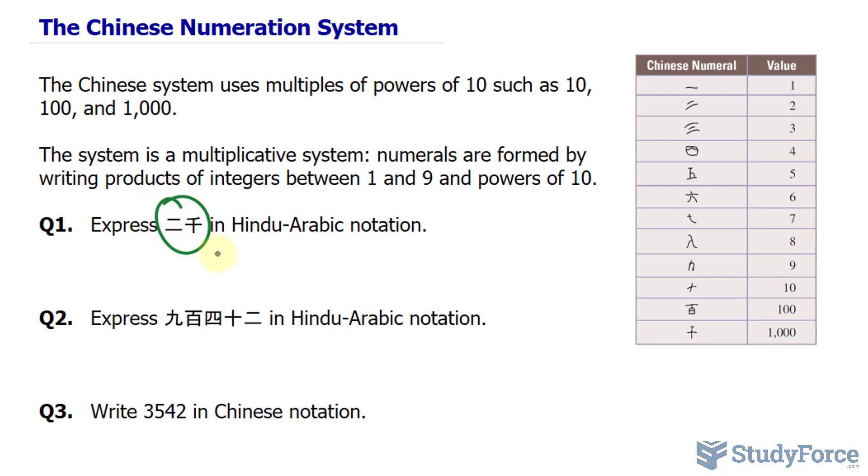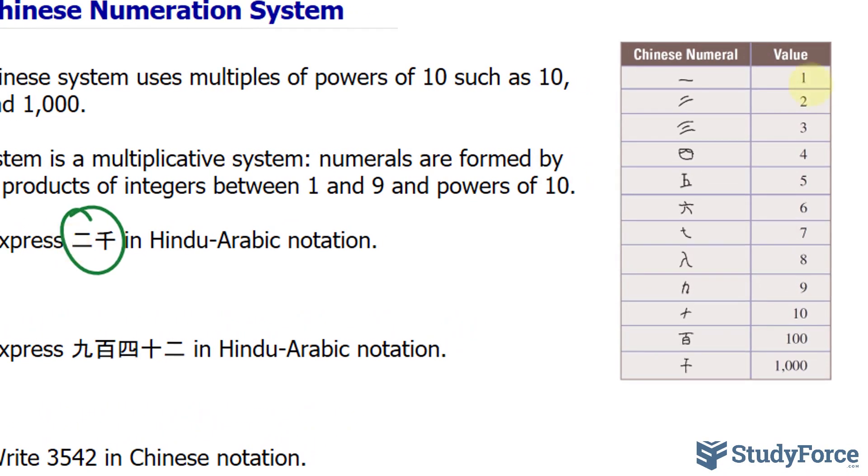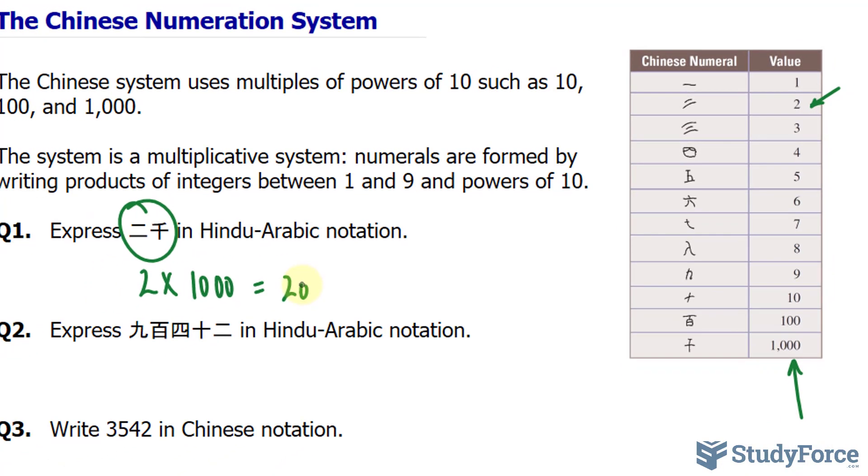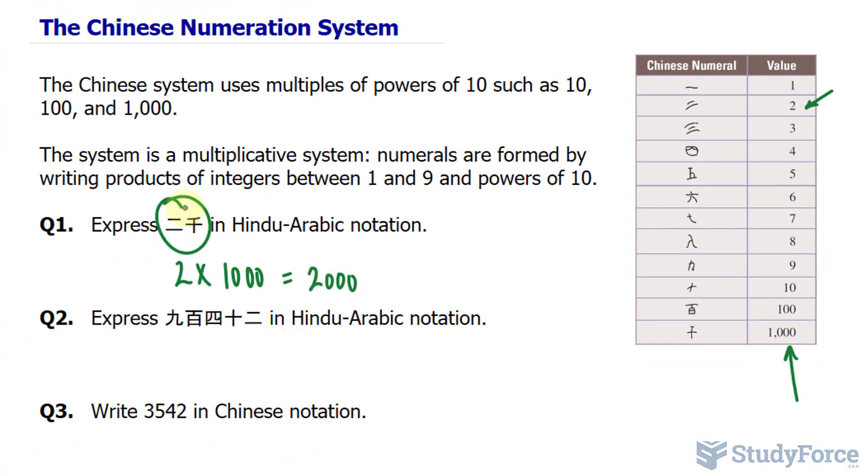How do we interpret this? The first numeral is the value 2, and that's shown right there. We have 2 times, this is found right here, and it represents 1,000. So 2 times 1,000 gives us 2,000. This is how you represent the number 2,000 in Chinese.